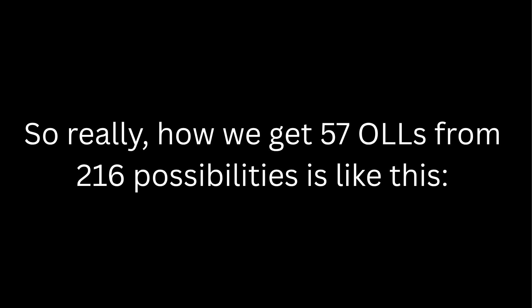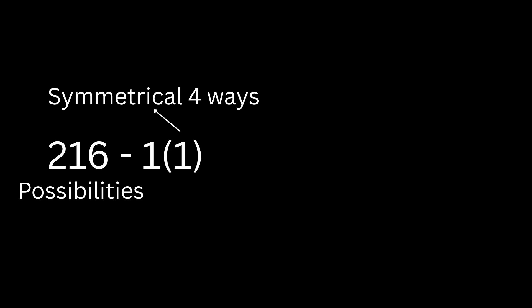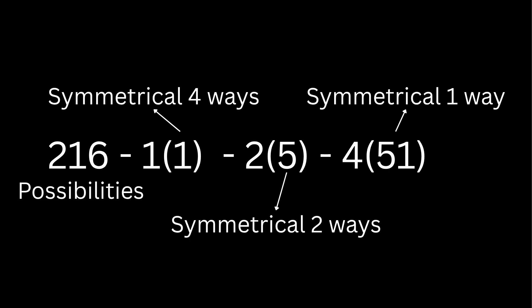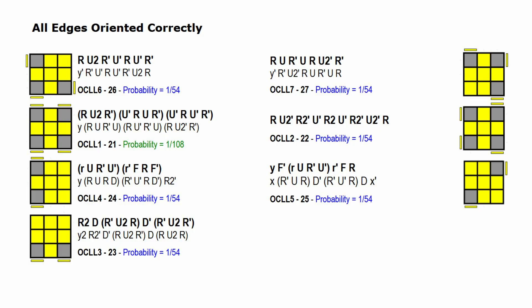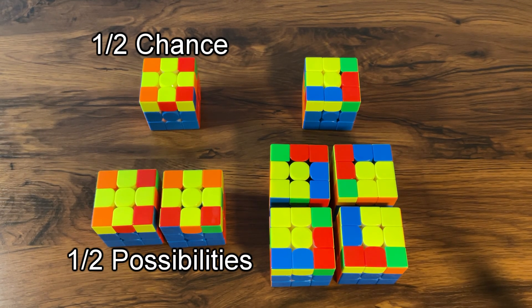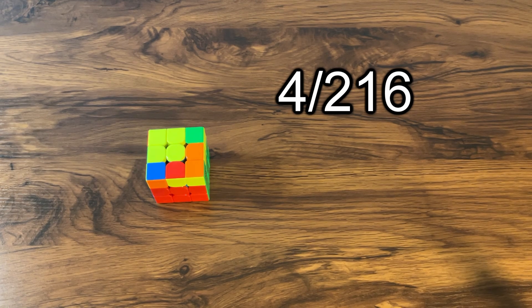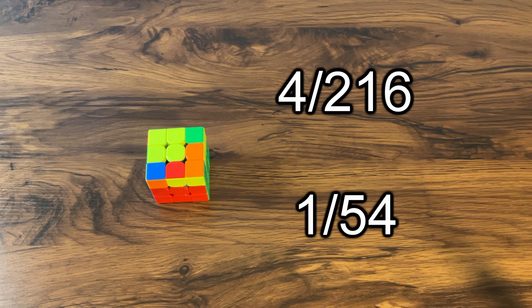So really, how we get 57 OLLs from 216 possibilities is like this: we have 216 possibilities. Cases symmetrical all four ways count for one case. The five cases that have two-way symmetry each count for two cases, and the rest which have no symmetry count for four cases each because of AUFs. We take off one more for the solved case and we cover all 216 possibilities. This is also why some OLLs have different chances of showing up — if a case has half the possibilities of happening, it also has half the chances. Since there are 216 possibilities total, if there's one possibility for a case it'll be 1 in 216; if there are two, it'll be 2 in 216 or 1 in 108; and if it has four possibilities, it'll be 4 in 216 or 1 in 54.